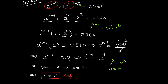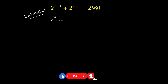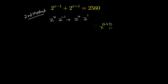Now the second method. I write this equation as 2 raised to the power x times 2 raised to the power minus 1, plus 2 raised to the power x times 2 raised to the power 1, because x raised to the power a plus b can be written as x raised to the power a times x raised to the power b. This is equal to 2560. I am now taking 2 raised to the power x common from the left hand side.